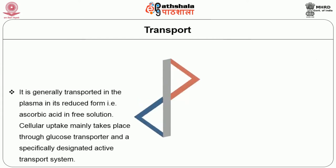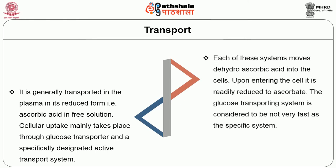Vitamin C is generally transported in the plasma in its reduced form, that is ascorbic acid in free solution. Cellular uptake mainly takes place through a glucose transporter and a specifically designated active transport system. Each of these systems moves dehydroascorbic acid into the cells. Upon entering the cell, it is readily reduced to ascorbate. The glucose transporting system is considered to be not as fast as the specific system.